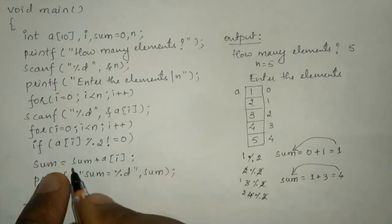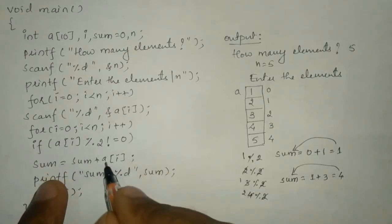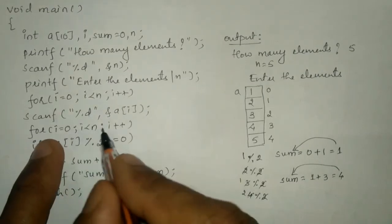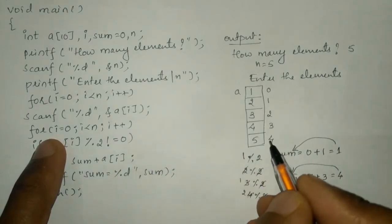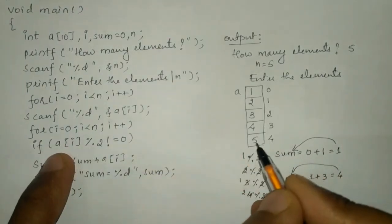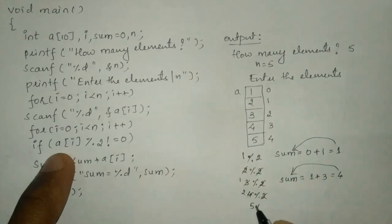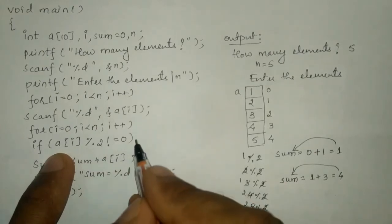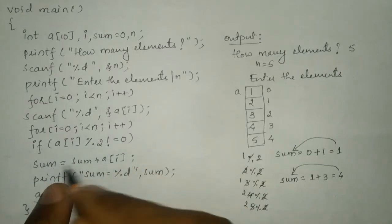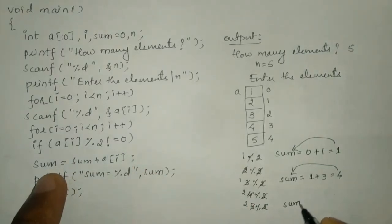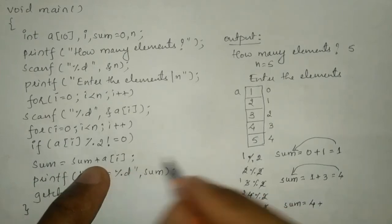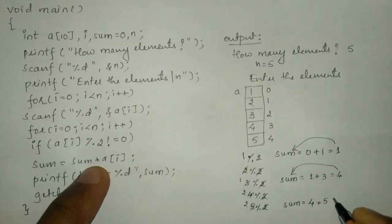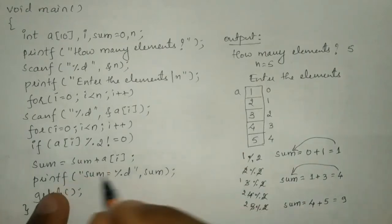The remainder is equal to 0, so the condition is false and it does not execute. Control transfers back to the for loop incrementing i by 1; now i is 4. a of 4 contains 5; 5 modulo 2 gives remainder 1, which is not equal to 0, so the condition is true. Sum equals sum plus a of 4: 4 plus 5 is 9, stored in sum.